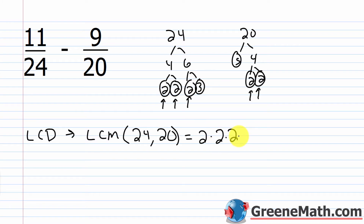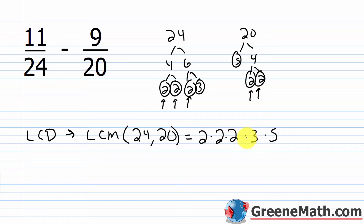Where students make a mistake is they throw all of the 2s in from both factorizations — that gives you a common multiple, but not the least common multiple. I have a 3 that's not common to both, so I throw that in, and a 5 that's not common to both, so I throw that in too. So we multiply: 2 times 2 times 2 is 8, times 3 is 24, times 5 is 120. That's your LCD or LCM.